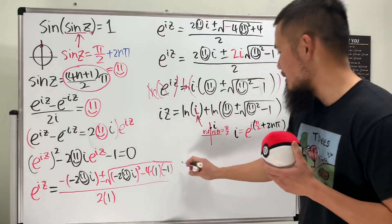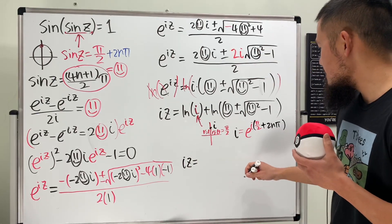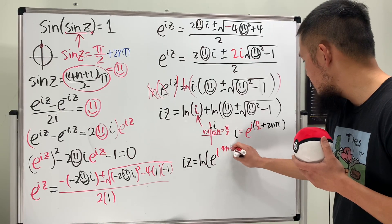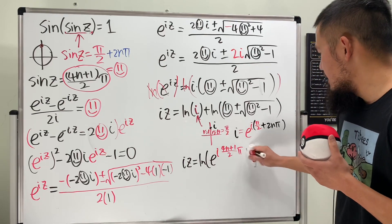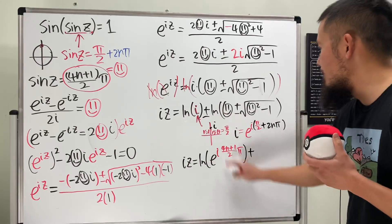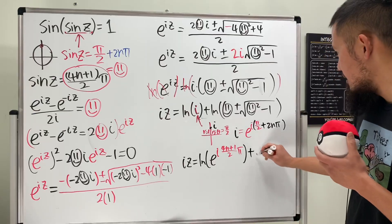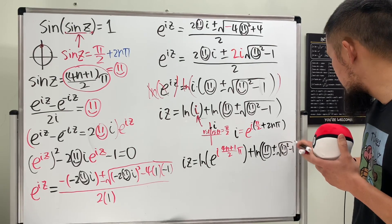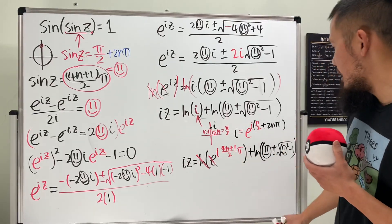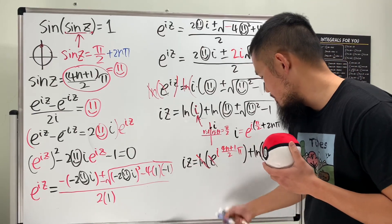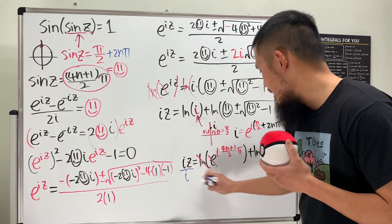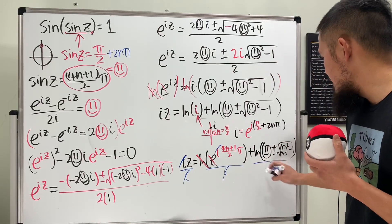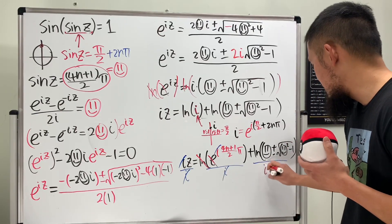So iz equals i·(4n+1)/2 · π plus ln(happy_face ± √(happy_face² − 1)). Dividing everything by i — remembering that 1/i = −i — we get z equals (4n+1)/2 · π, minus i · ln(happy_face ± √(happy_face² − 1)).